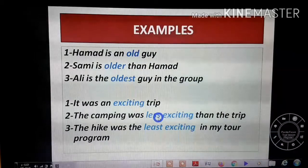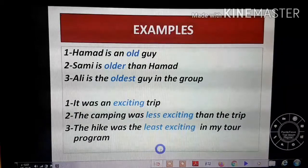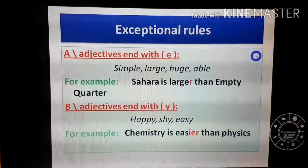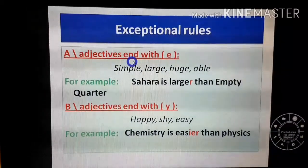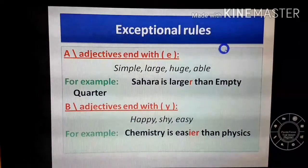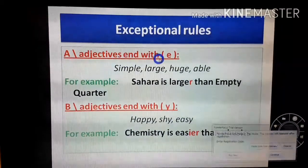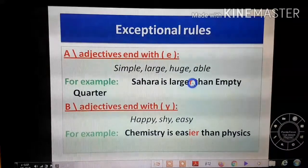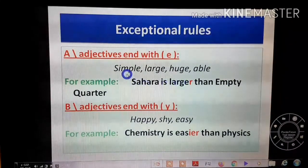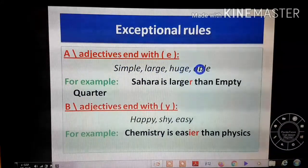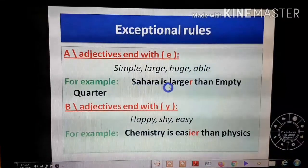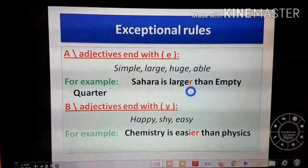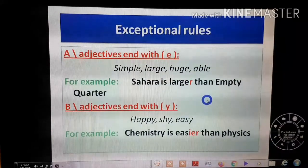Now exceptional rules for short adjectives. Rule A: adjectives ending in 'e' — like simple, large, huge. Since they already end in 'e', just add 'r' instead of 'er.' For example: 'Sahara is larger than the Empty Quarter.' The adjective 'large' ends in 'e', so we just add 'r.'